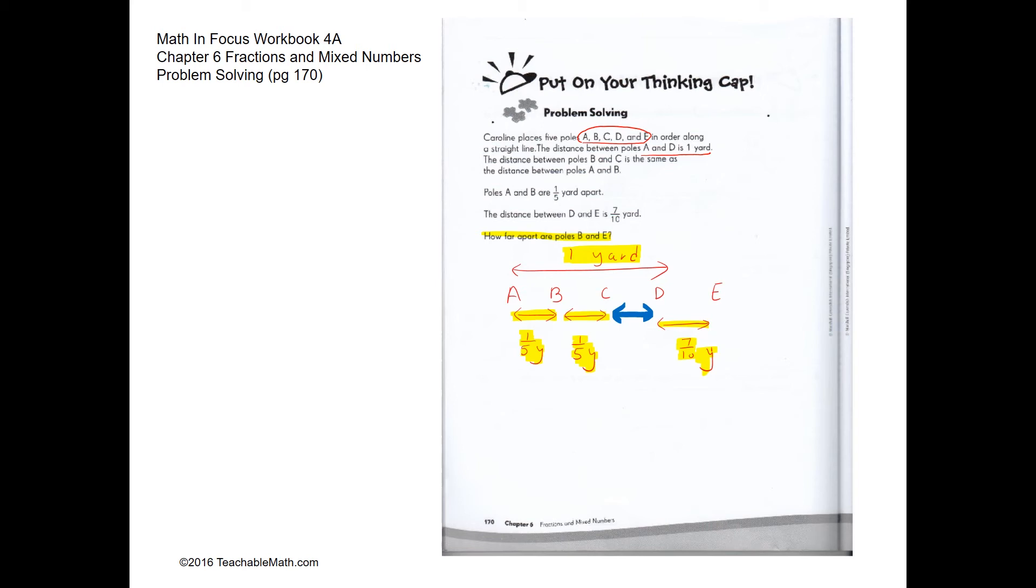So the distance between C and D would be 1 yard minus 1 fifth minus 1 fifth, which is 3 fifths yard. So this would be 3 fifths.